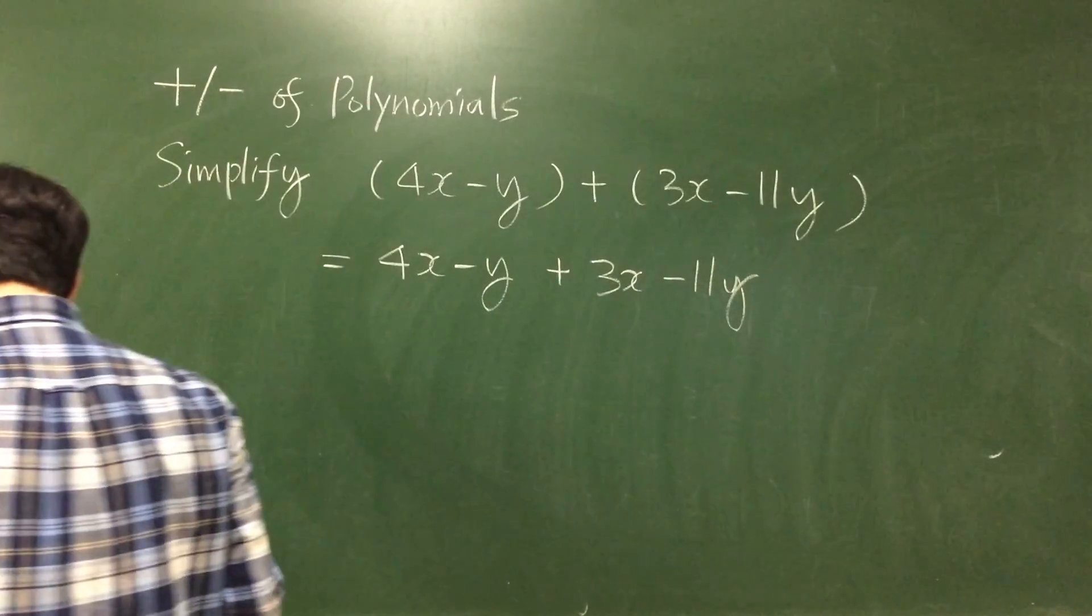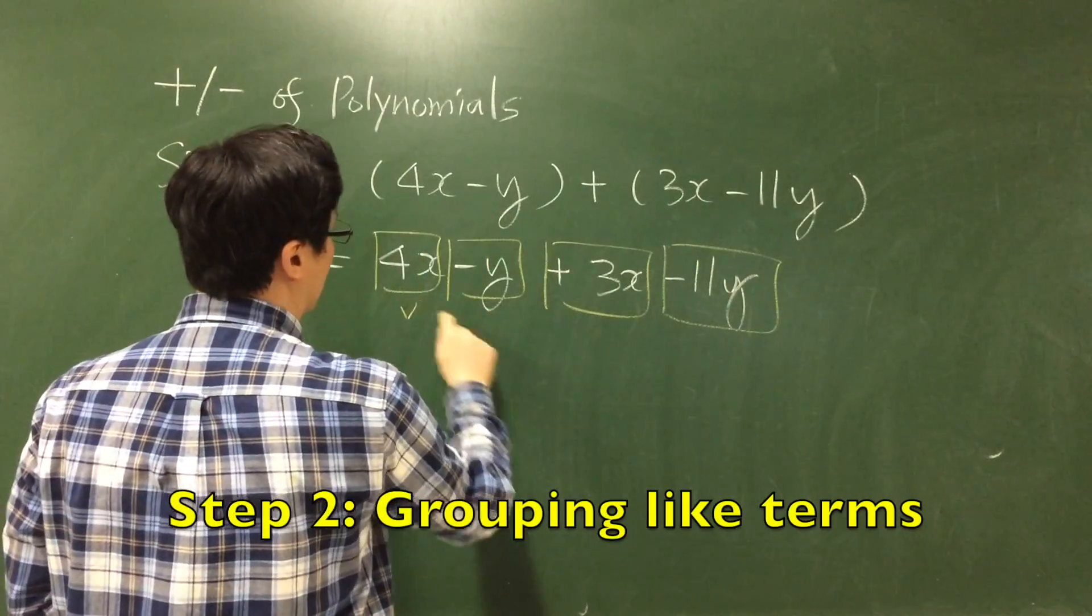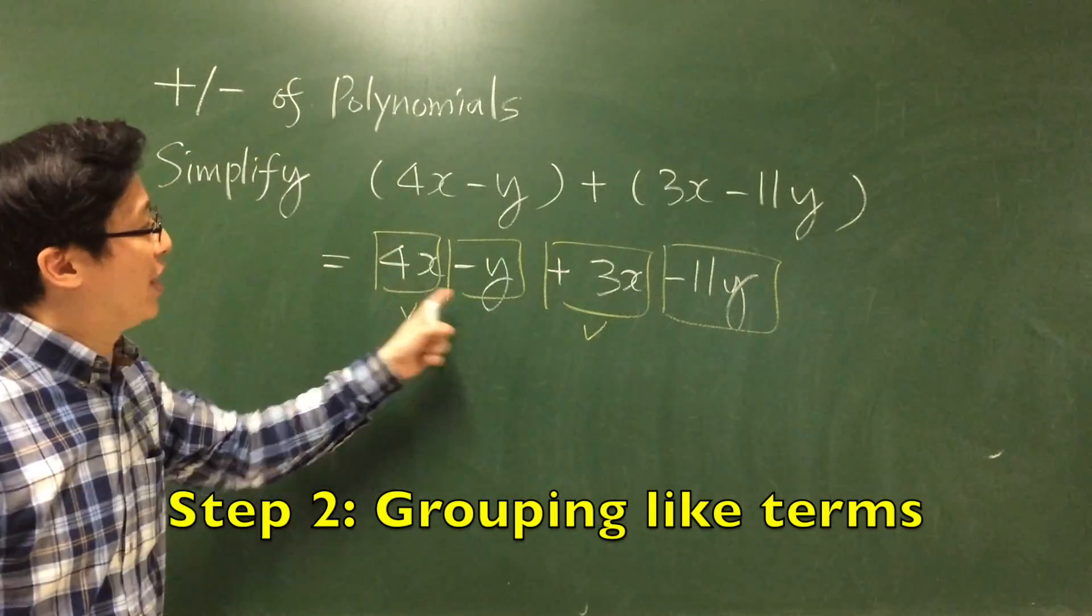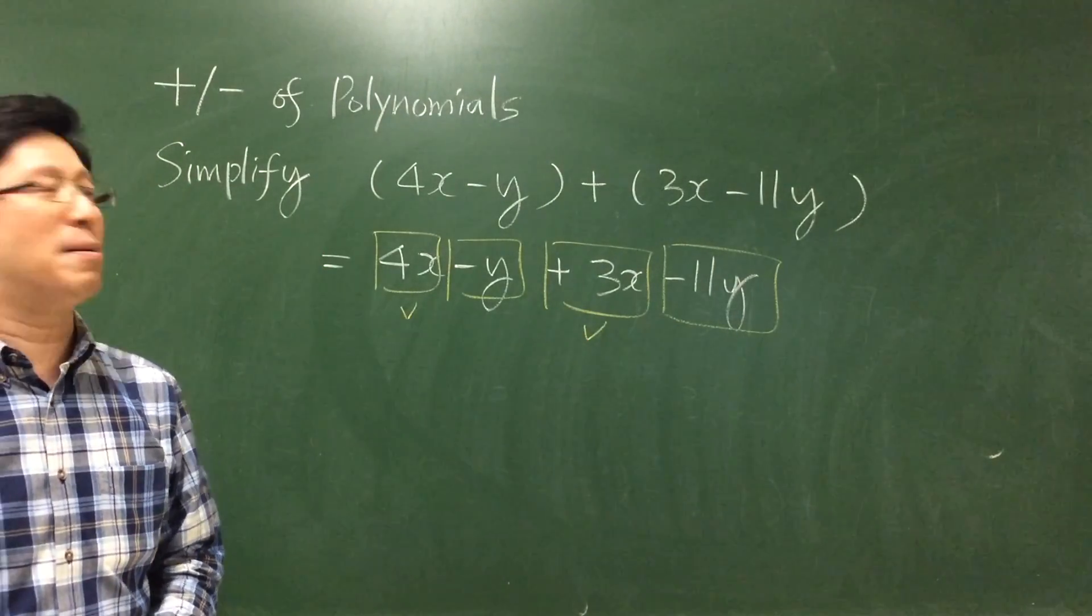Now you can see we have 4 terms. So these are like terms: 4x plus 3x. And actually we can do the addition in our mind.